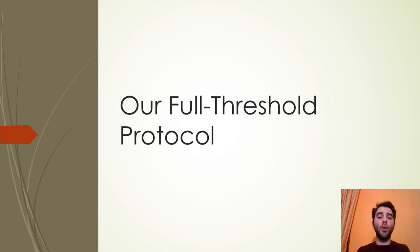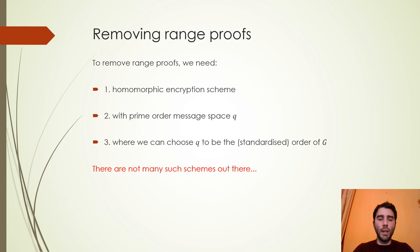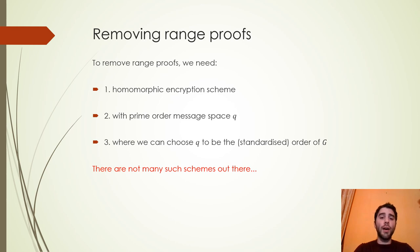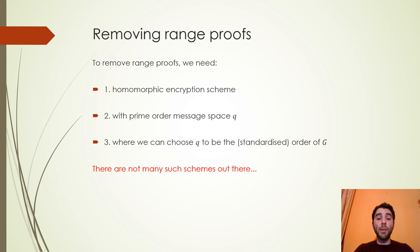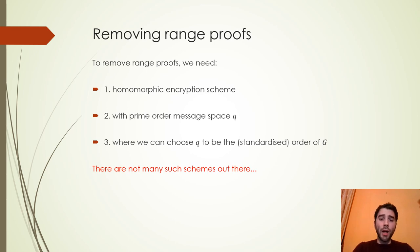In the signing phase of the Gennaro-Goldfeder protocol, each of the parties has to run a P2P protocol with the others, giving about N squared protocols, and in each of them range proofs are present. The range proofs are caused by the difference between the PAYE encryption scheme modulus N and Q, which is the modulus of the elliptic curve. What we want is to use a homomorphic encryption scheme whose message space has order Q, the same Q as the elliptic curve. There are not many such schemes, but we can use the Castagnola-Guillaume encryption scheme.